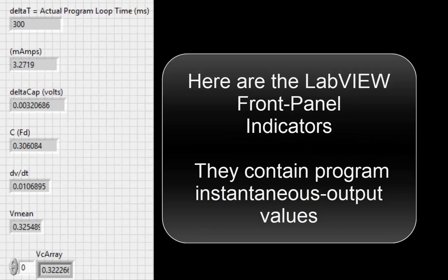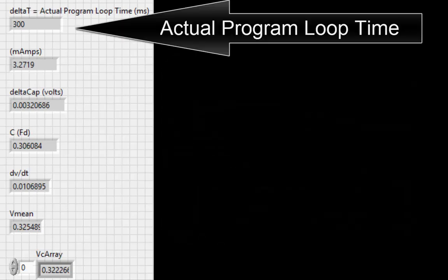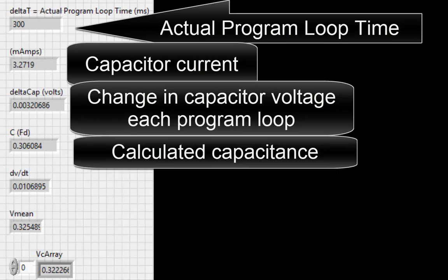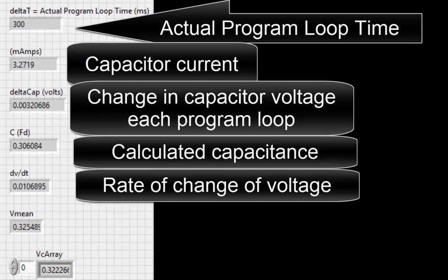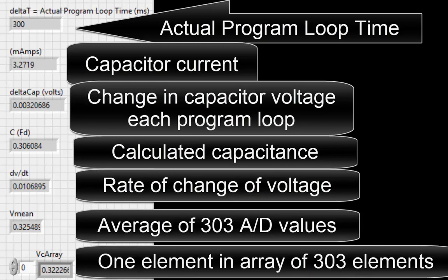Here are the LabVIEW front panel indicators. They contain program instantaneous output values. Actual program loop time. Capacitor current. Change in capacitor voltage each program loop. Calculated capacitance. Rate of change of voltage. Average of 303 A to D values. And one element in the array of 303 elements.